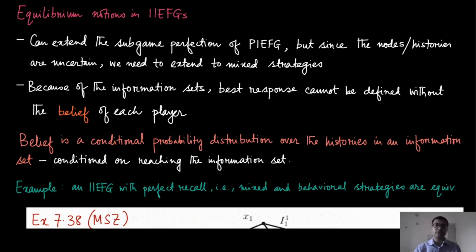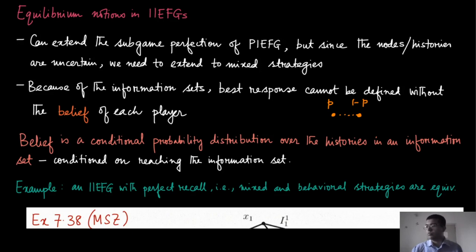From now on we will only be discussing games which are of perfect recall, therefore it does not really matter whether we call the strategies mixed strategies or behavioral strategies — they are equivalent in some sense. We will define belief as the conditional probability distribution over the histories in the information set. If we are in a particular information set with two nodes, the probability p and 1 minus p with which the player believes the game is in a particular node will be considered the belief of that player. This is a conditional probability, conditioned on the fact that the game has reached this particular information set.